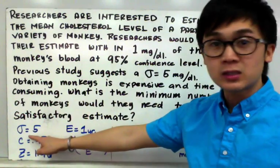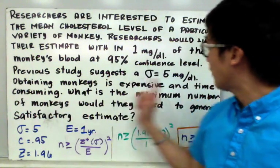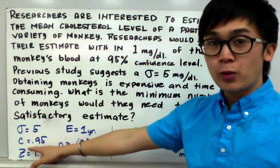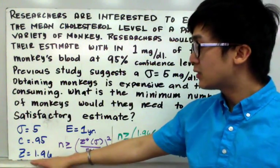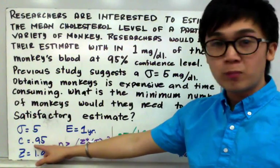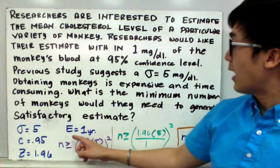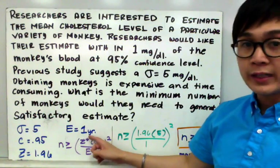Our population sigma is given, which is 5 mg/dL of blood. Our confidence level is 0.95. Our z star for confidence level of 0.95 is 1.96, and our maximum error is equal to 1.